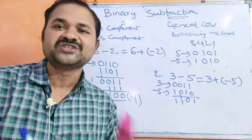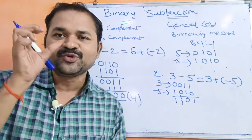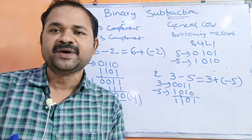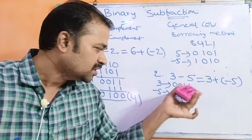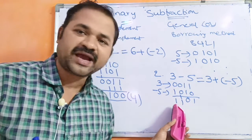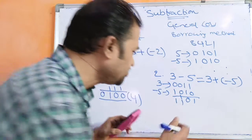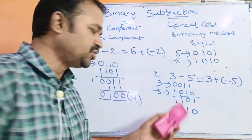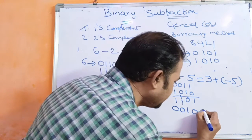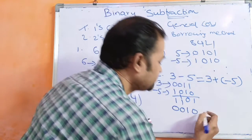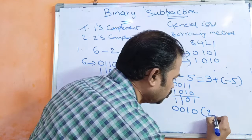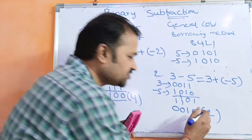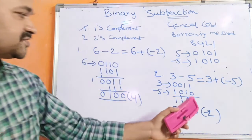The result is in one's complement form. So in order to get the corresponding decimal number, we simply calculate the one's complement of this result. So 1, 1, 0, 1 in one's complement is 0, 0, 1, 0. In 8, 4, 2, 1 notation, that is 2. Here the first bit is the sign bit. The first bit is 1, which specifies that it is a negative number. So the result is minus 2.